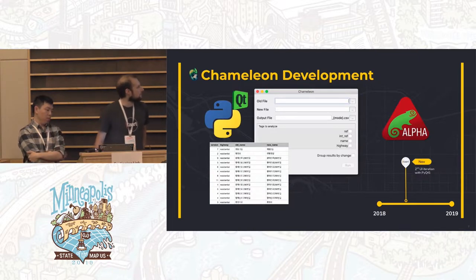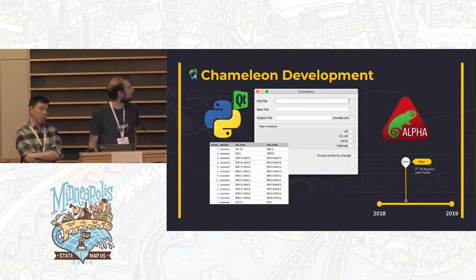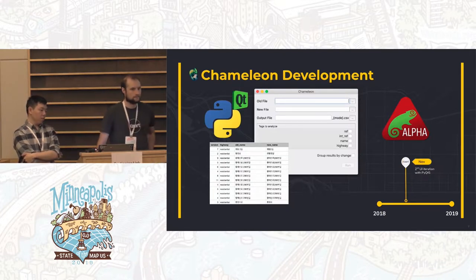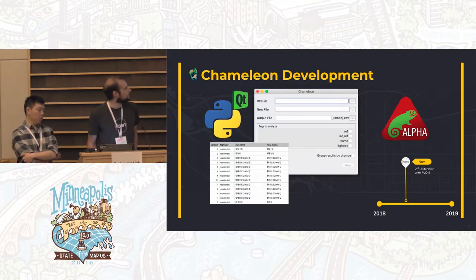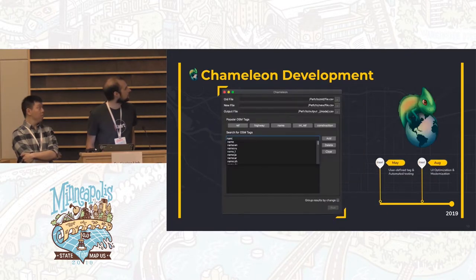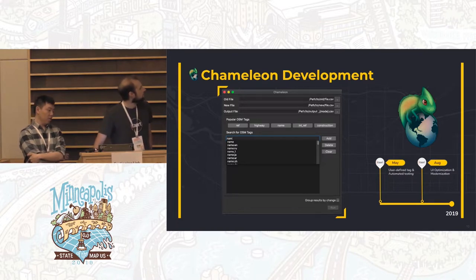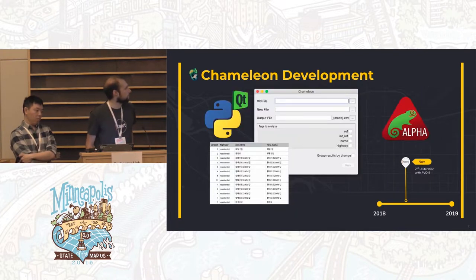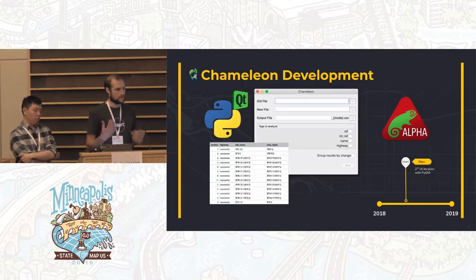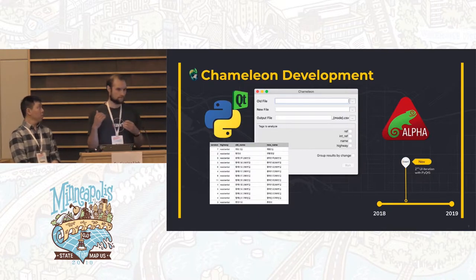We then redid it all in Python and PyQt to eliminate the command line entirely and make it more useful. That's the original interface and the original outputs, and this is what it looks like today. We started off working on roads a lot at CART, so we started with the tags we were checking most. Chameleon outputs a CSV per tag, giving you a list of all changes to a particular tag.